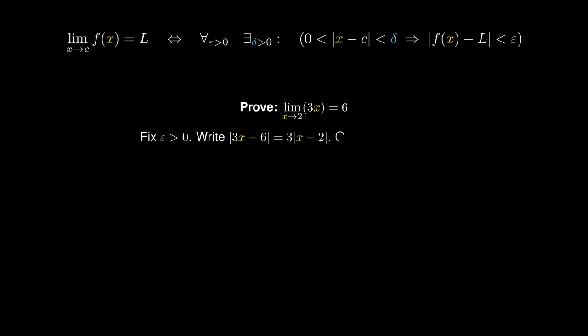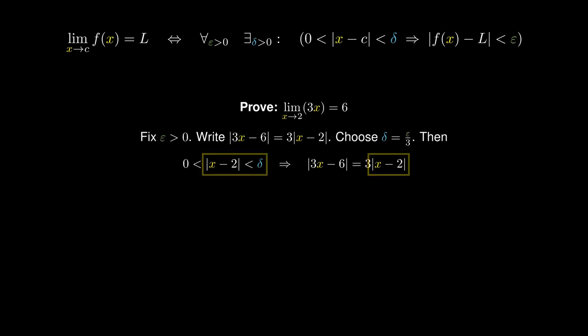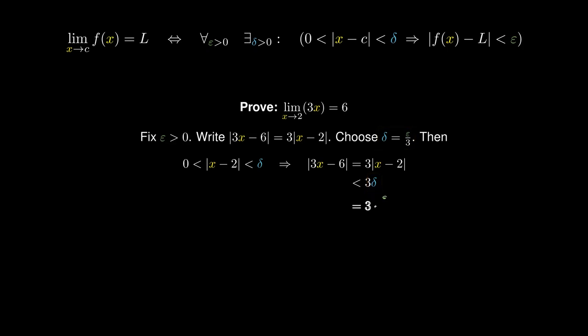This allows us to choose delta to equal epsilon over 3. Then if the absolute value of x minus 2 is less than delta, this would imply that the absolute value of 3x minus 6, being equal to 3 times the absolute value of x minus 2, using the assumption, must be less than 3 delta. Using our choice of delta, this must equal 3 times epsilon over 3, which simplifies to epsilon.